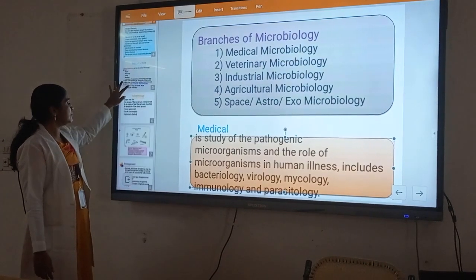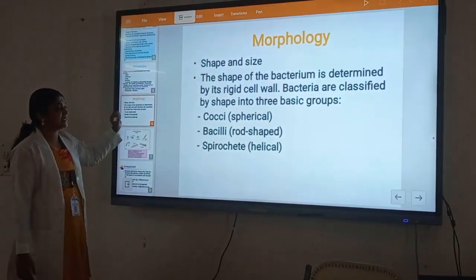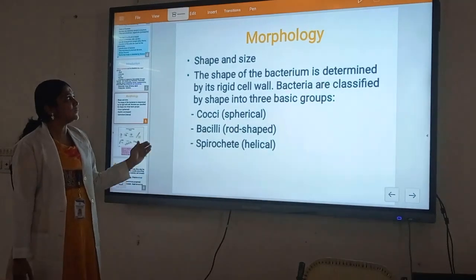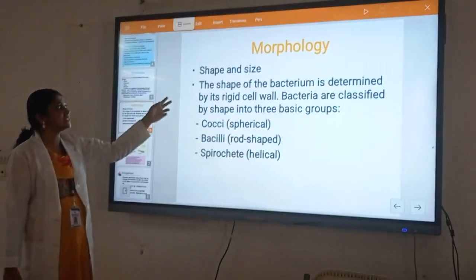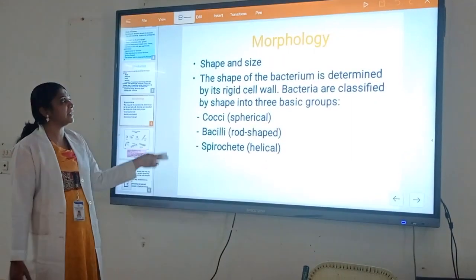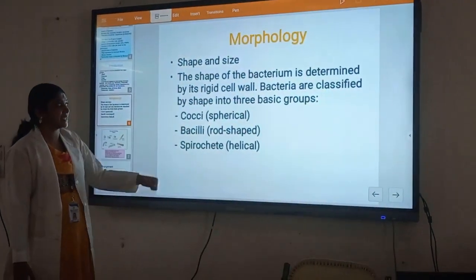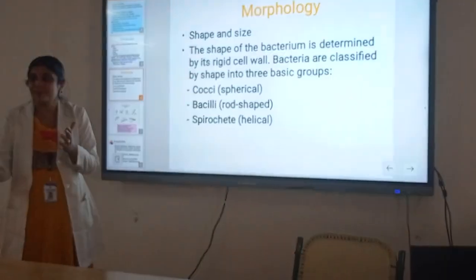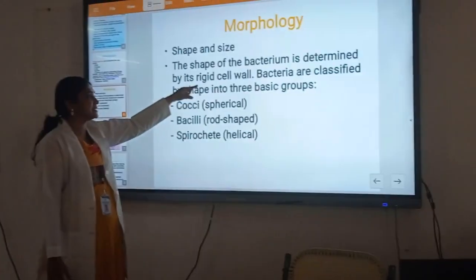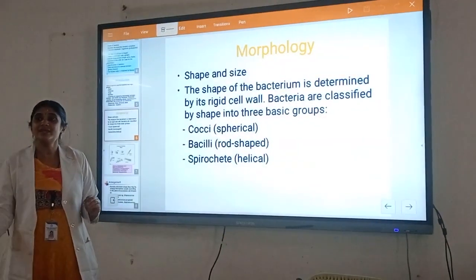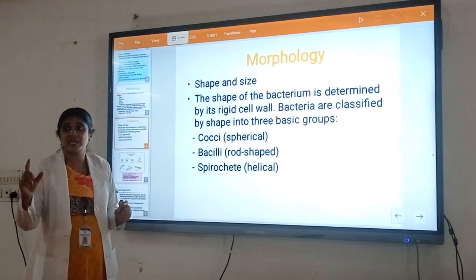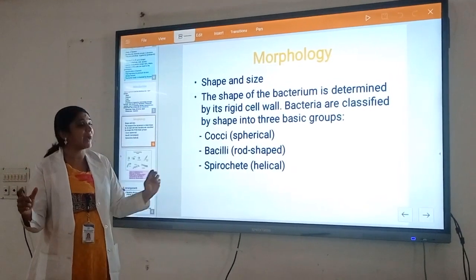We can now go over the morphology of bacteria. In the morphology of bacteria, we can see that bacteria are usually divided into different shapes depending on their shape and size, and this shape and size of bacteria is determined by the organism itself.